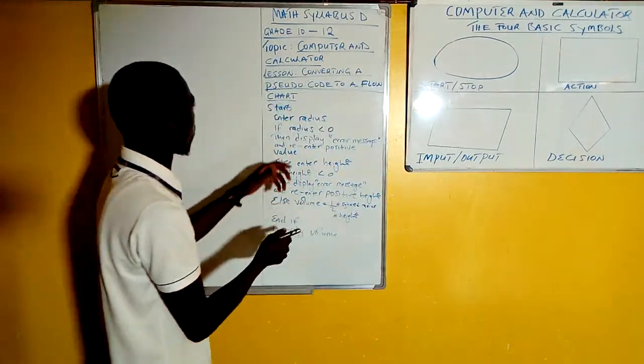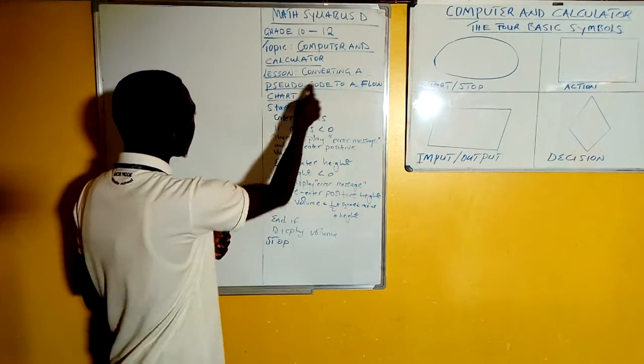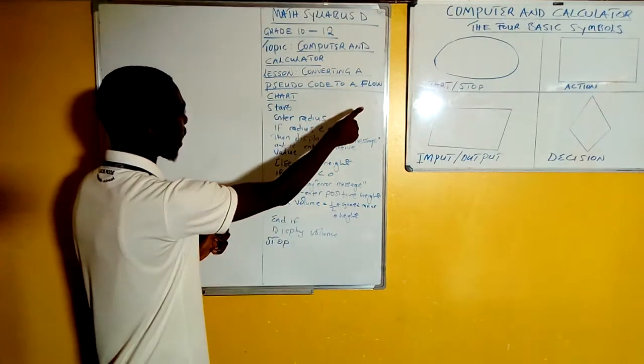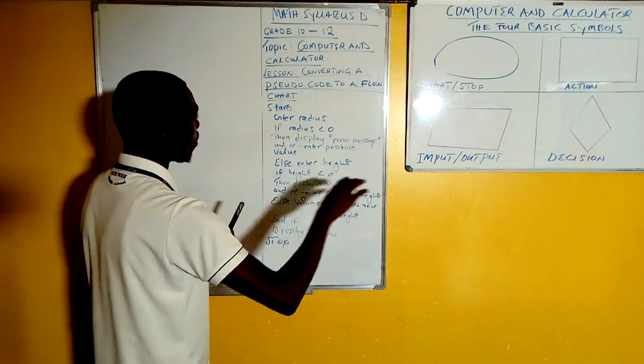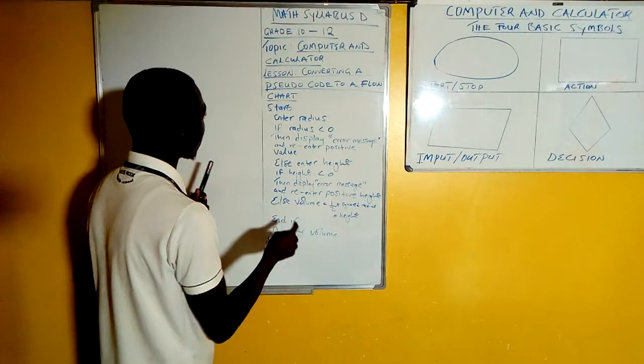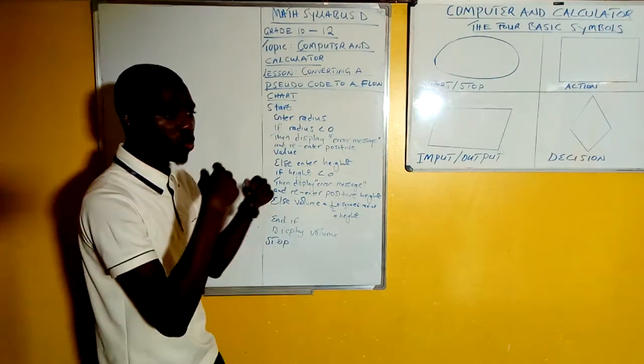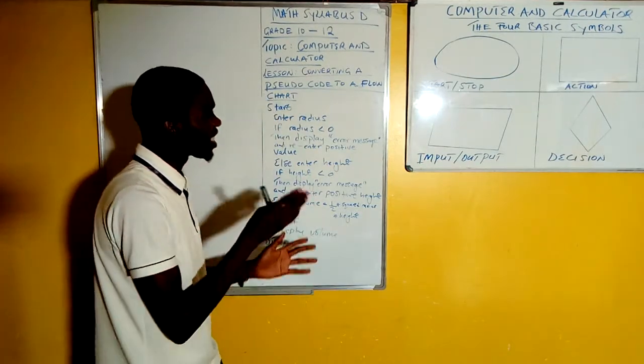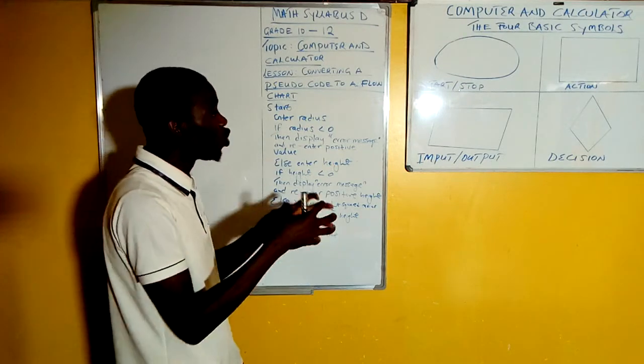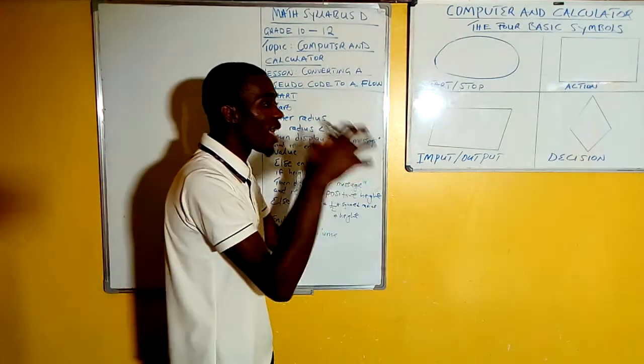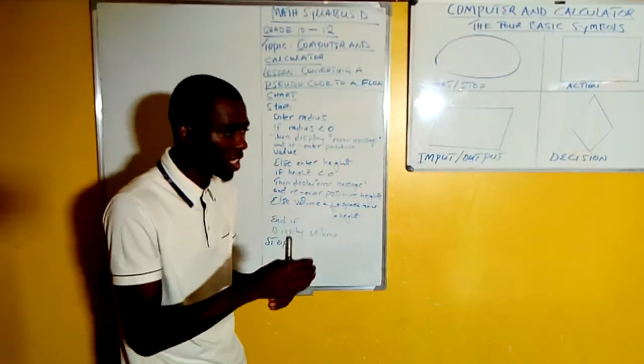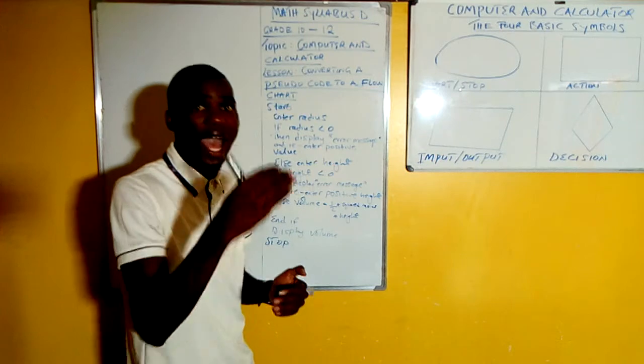Now going to the question that we are trying to practice - converting a pseudocode to a flowchart. We have said a flowchart is a graphical representation of a problem solving strategy. Now we also have to understand what a pseudocode is. A pseudocode is simply a step-by-step set of instructions that can be used to program a code.